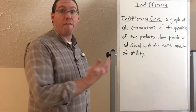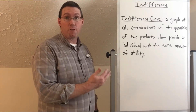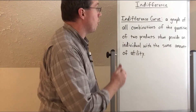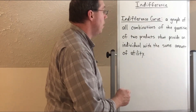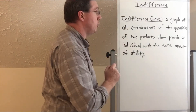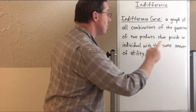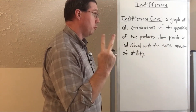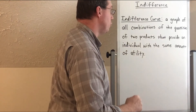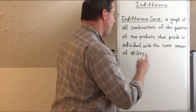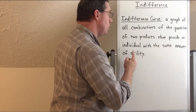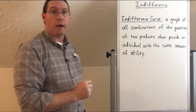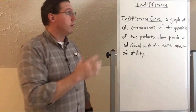So here's your definition for an indifference curve — go ahead and write this down. An indifference curve is a graph of all combinations of the quantities of two products that provide an individual with the same amount of utility.